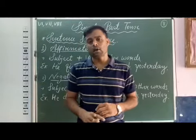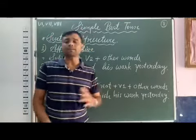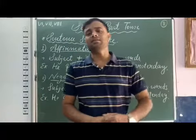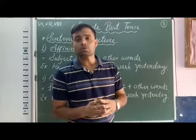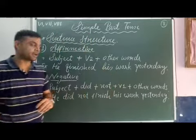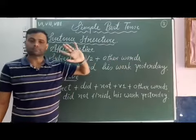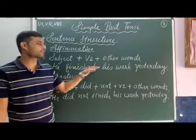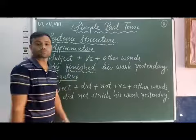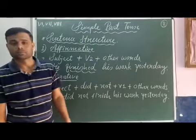Now let's see the sentence structure for simple past tense. The sentence structure of an affirmative sentence is: Subject + V2 + other words + full stop. For example: He finished his work yesterday. Here, 'he' is the subject, 'finished' is V2, and 'his work yesterday' are the other words.